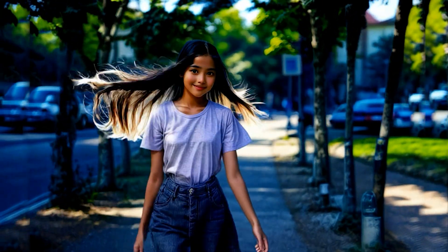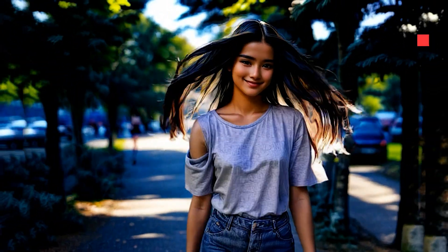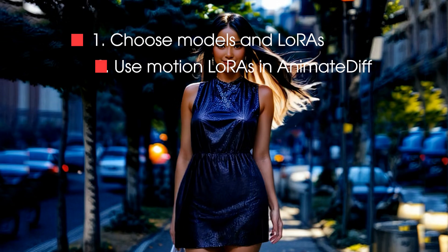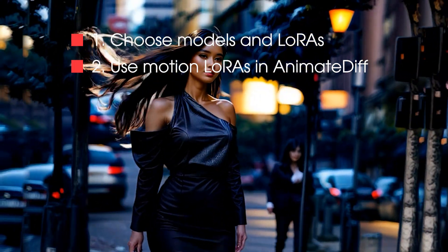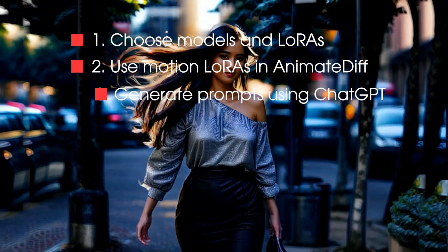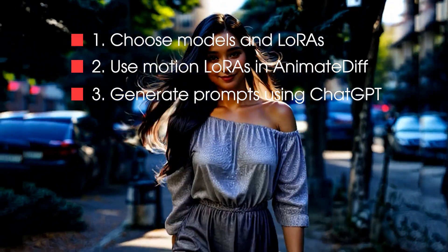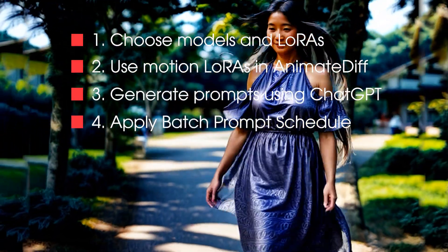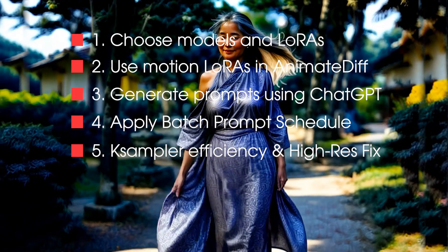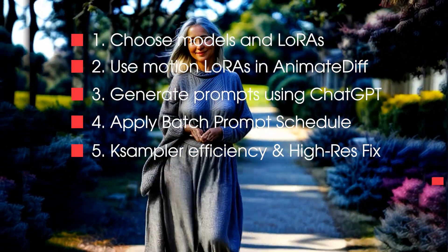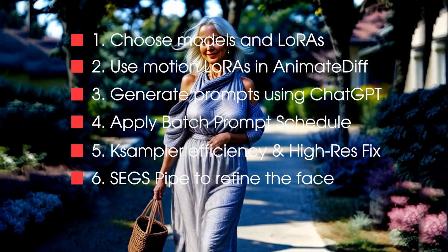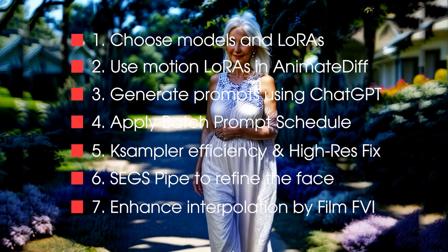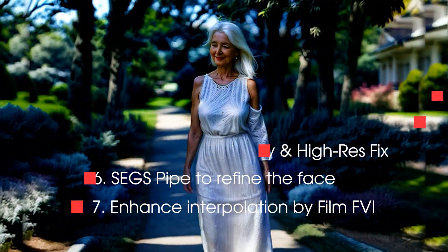Here's the breakdown of how this method works: 1. Choose models and LoRAs, e.g., realistic, anime, chibi. 2. Use motion LoRAs in Animate Diff for consistent movement. 3. Generate prompts for a character aging from young to old using ChatGPT. 4. Apply batch prompt schedule to render these prompts at specific frames. 5. Use sampler efficiency and high-res fix to create images. 6. Use SEGSPipe to refine the character's face for sharpness and clarity. 7. Enhance video interpolation with Film FVI for smoother playback.